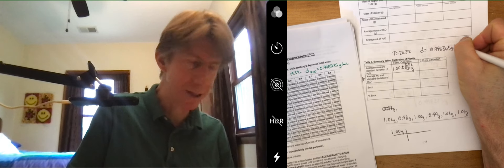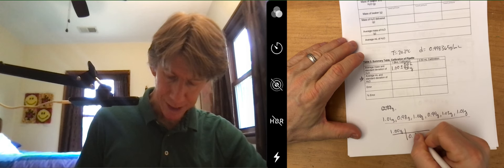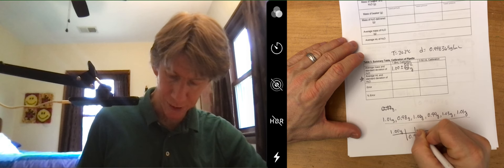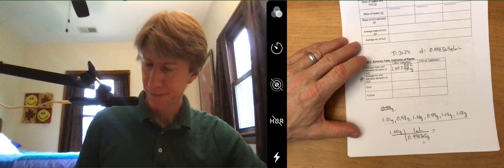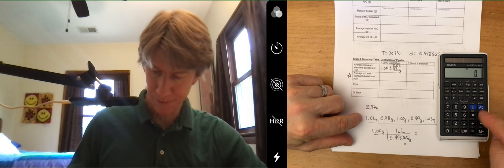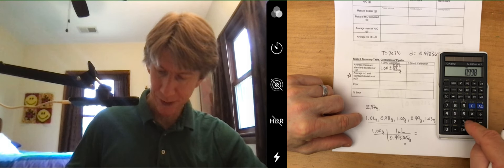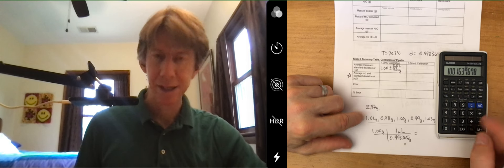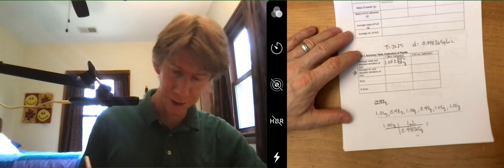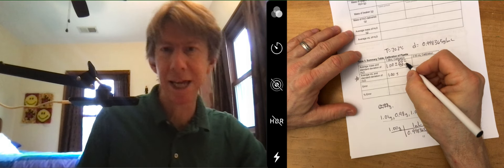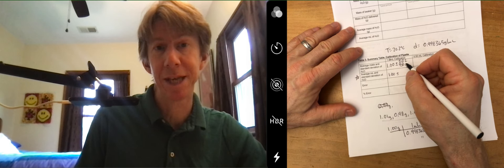0.998365 grams per one milliliter and I think we know what we're going to get here. 1.00 divided by 0.998365, still 1.00 milliliters. And if you did the same thing here to the standard deviation you'd get the same thing too except that now our units are in milliliters.